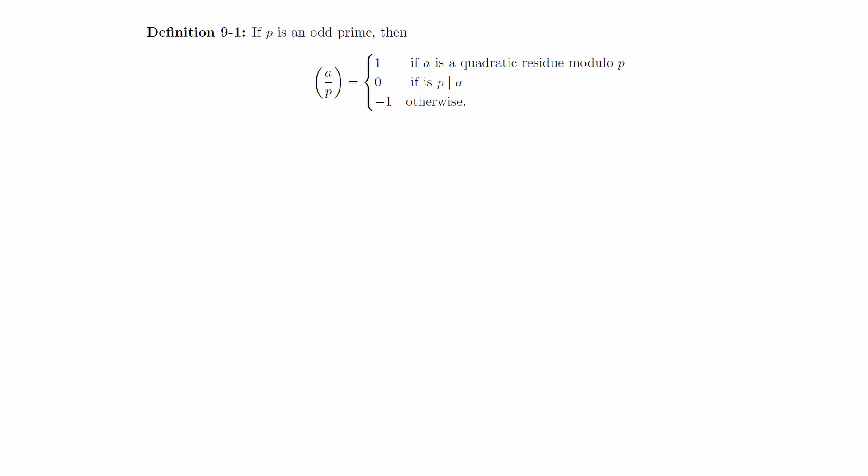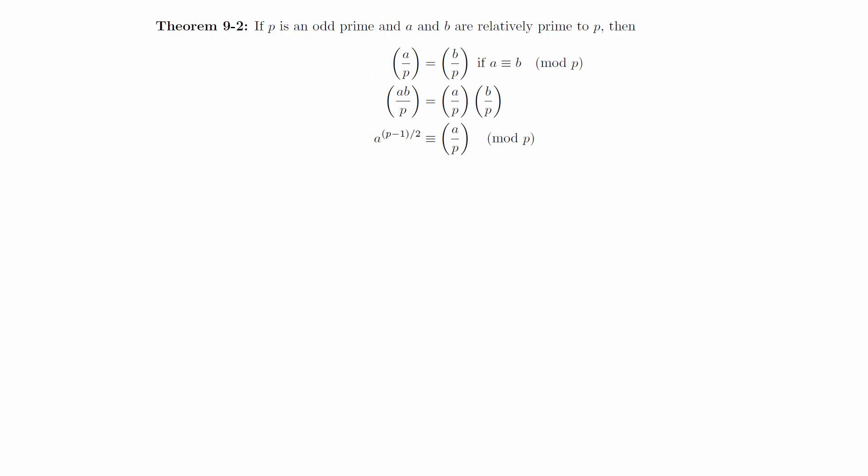We will now prove some basic properties of the Legendre symbol. If p is an odd prime and a and b are relatively prime to p, then these three equations hold.